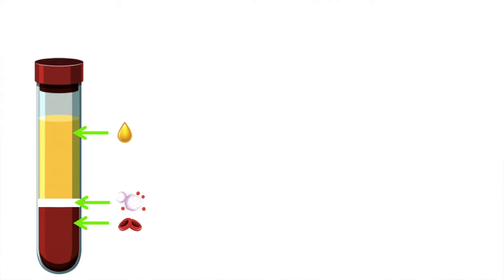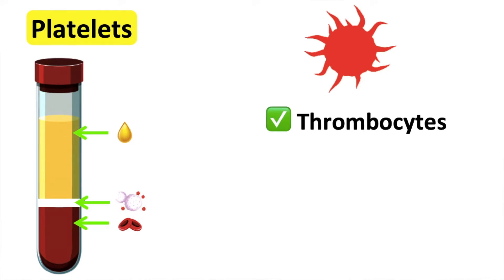In this video I will focus on the role of platelets. Platelets are also known as thrombocytes. These are cell fragments that make up around 1% of the blood. They're produced in the bone marrow.